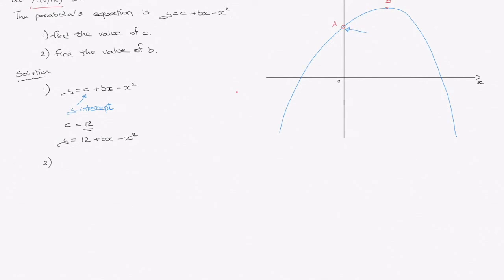In our first part, we used A with coordinates 0, 12, that was the y-intercept. So now we're going to use the second bit of information that was given to us, which was that B has coordinates 2, 16. Now, how are we going to use this?